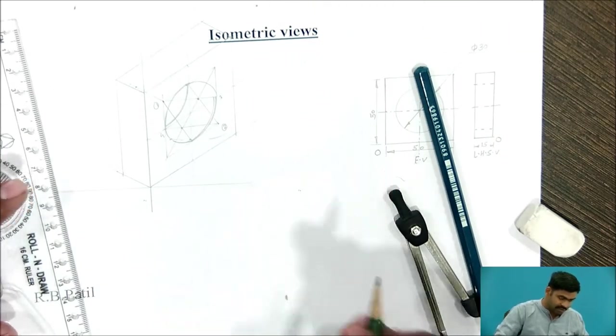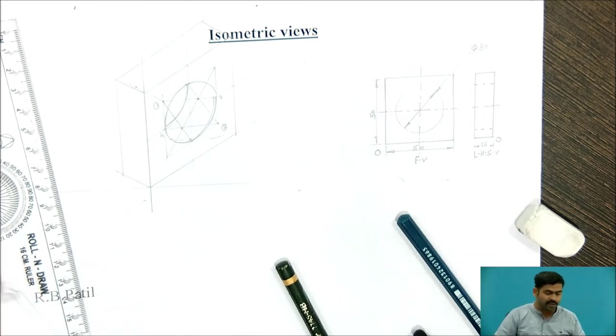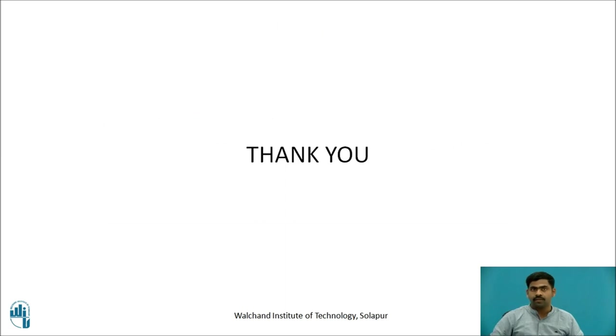Here, it will end your problem. Simply, with the help of four centre method, you can draw the isometric view for the given object. Thank you.